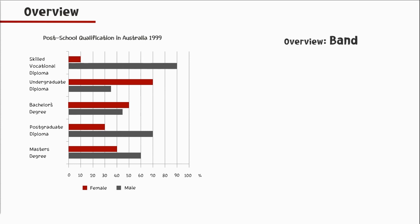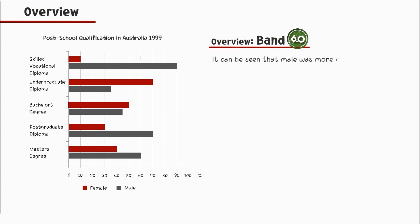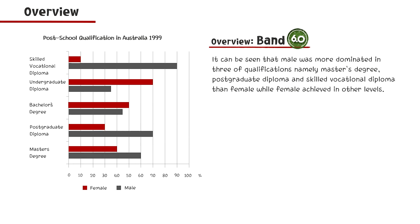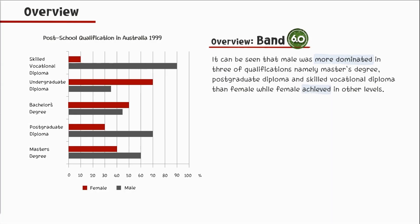Let's study these two given overviews. The band 6 overview reads: 'It can be seen that male was more dominated in three of the qualifications, namely master's degree, postgraduate diploma, and skilled vocational diploma than female, while female achieved in other levels.' In the first overview, although the writer attempted to compare the highest and lowest figures, the writer made several mistakes — incorrect use of the words 'dominated' and 'achieved,' the year was not included, and one key feature was not addressed.